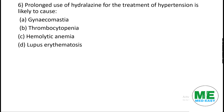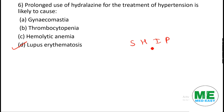Next MCQ: prolonged use of hydralazine in the treatment of hypertension is likely to cause what? It causes drug-induced systemic lupus erythematosus. Hydralazine is one of the drugs known to cause drug-induced lupus erythematosus.